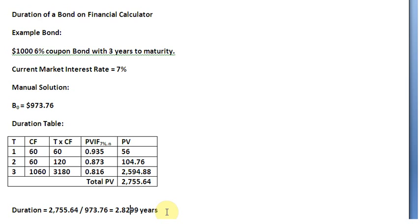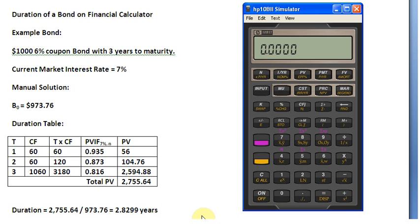The purpose of this screencast is to arrive at this same result through a financial calculator. So I'm going to pull up the calculator here which is simulating the HP 10B2 business calculator. The first thing I'm going to do is punch in my payment which is going to be $60 because the coupon rate is 6%. So I punch in 60 and store it as my payment.